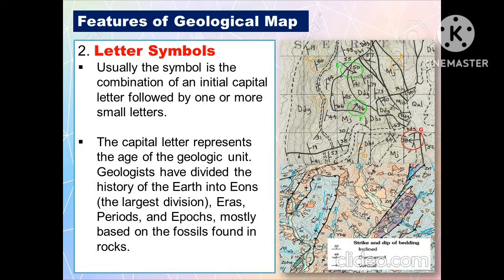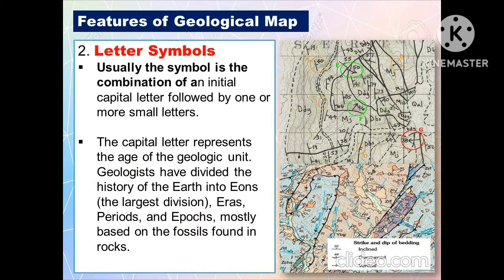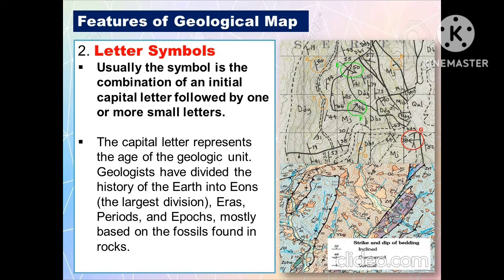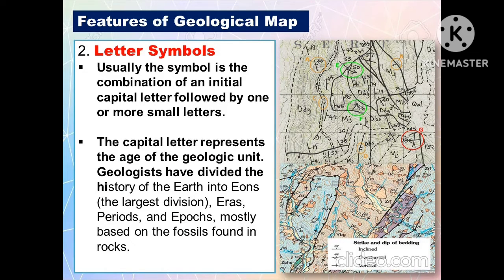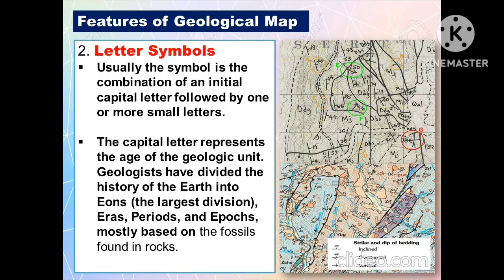Another feature of geological maps is the letter symbols. Usually, the symbol is a combination of an initial capital letter followed by one or more small letters. The capital letter represents the age of the geologic unit. Geologists have divided the history of the earth into eons, the largest division, then eras, periods, and epochs, mostly based on the fossils found in the rocks.